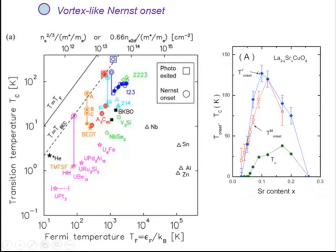We can plot this Nernst onset temperature on the diagram of TC versus TF. For example, the 214 system gives a point very close to the hypothetical BEC dotted line, where we assume that local phase coherence is at least achieved. Similarly for underdoped YBCO, and also for the BEDT organic system where the Nernst effect starts around 50 K — again, plotting with the same superfluid density measured by μSR gives a point on the hypothetical BEC line.